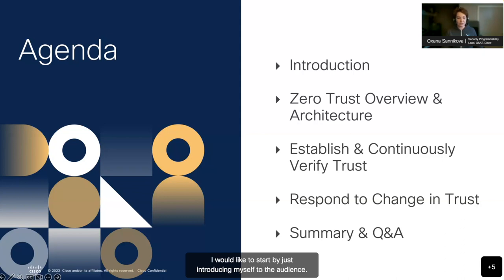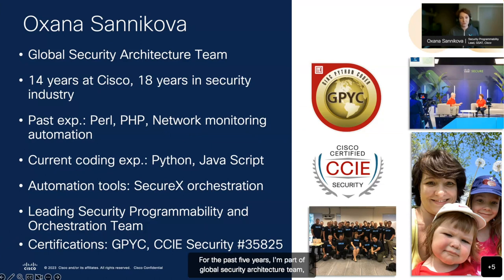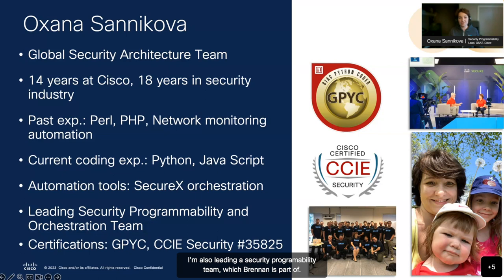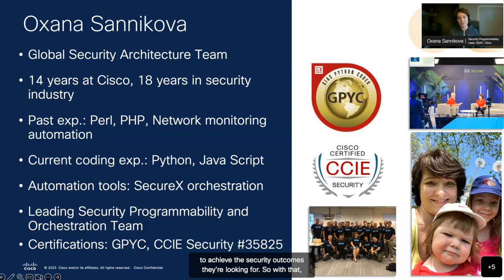I'd like to start by introducing myself. I've been with Cisco for almost 15 years, over 18 years in the industry. For the past five years, I'm part of a global security architecture team. Jamie is my former colleague on the team as well. My specialty is security APIs, automation, and orchestration. I'm also leading a security programmability team, which Brennan is part of. Overall, we talk to customers on a daily basis about their automation use cases and how we can leverage APIs, automation, and orchestration tools to help customers achieve the security outcomes they are looking for.